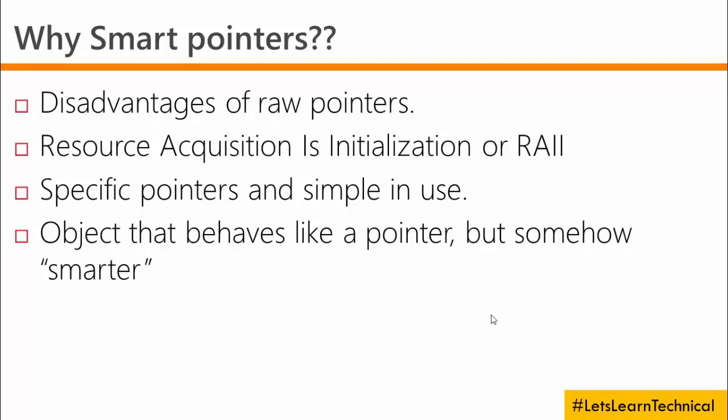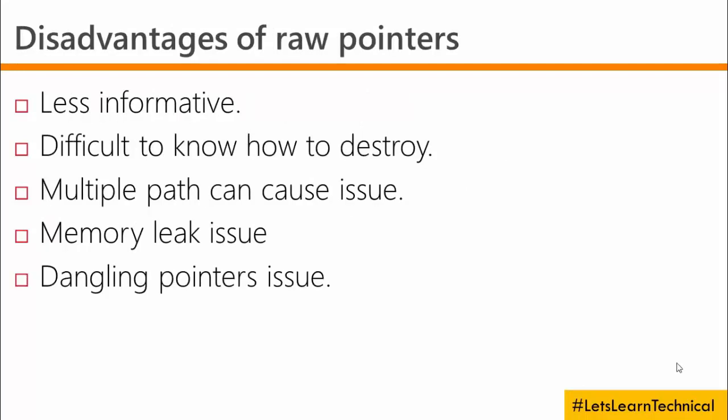Third, we have three types of smart pointers, each specific for specific needs. Fourth, smart pointers are objects that behave like a pointer but are somehow very smart. Now we will look into all the disadvantages of raw pointers.